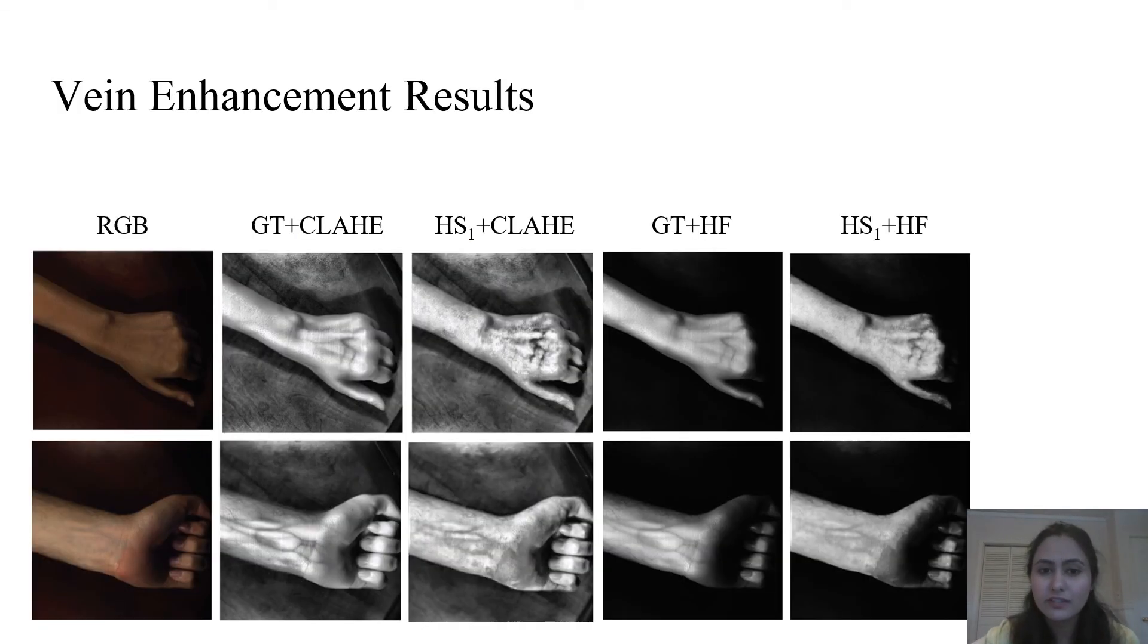Next, we show vein enhancement results. After reconstruction, image enhancements are applied on the grayscale image having vein information. We enhance the images by applying image enhancement techniques on the reconstructed band as well as ground truth band. The first column shows the RGB image used as input to the reconstruction model HS1. The second and third columns depict results obtained by applying CLAHE enhancement on the ground truth and the reconstructed band respectively. Similarly, the last two columns depict results obtained by applying homomorphic filtering enhancement. The image enhancement techniques produce better contrast and provide clearer visualization of the veins.